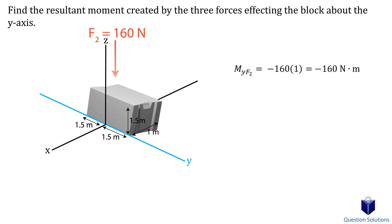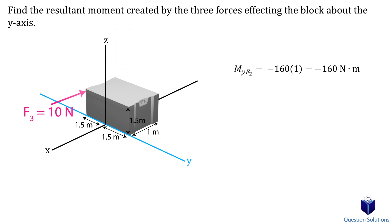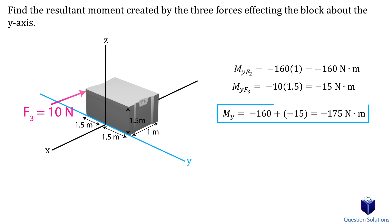Next, force F3 has a perpendicular distance of 1.5 meters to the y-axis. This force also causes the slab to turn clockwise, so it's also negative. The resultant moment is the sum of the two moments. Since we get a negative answer, the moment vector points in the negative y-direction, confirming the slab turns clockwise about the y-axis.